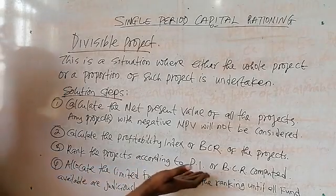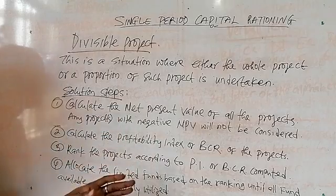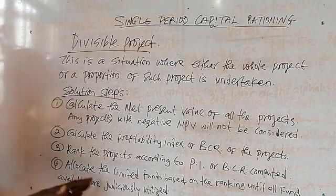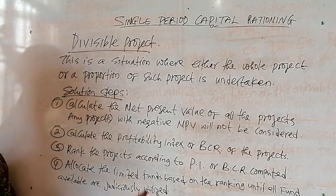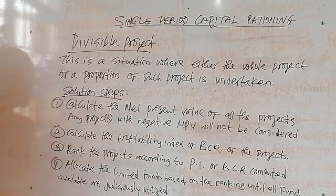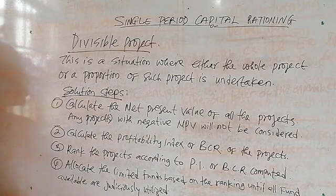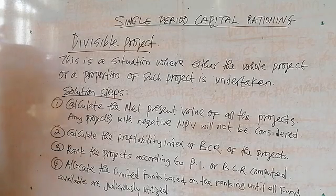You then rank the projects according to the PI or BCR computed. Next, you allocate the limited funds based on the ranking until all funds are fully and judiciously utilized. The project that ranks first based on the PI computed gets funded first, because it is going to give you the highest return from your list of projects.